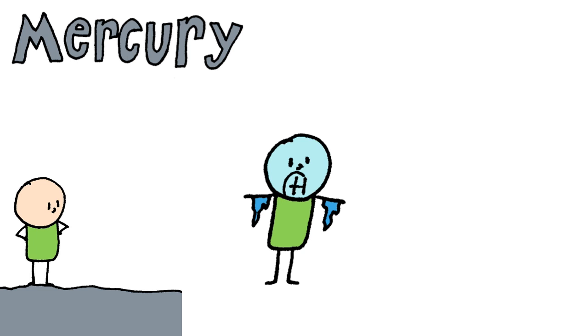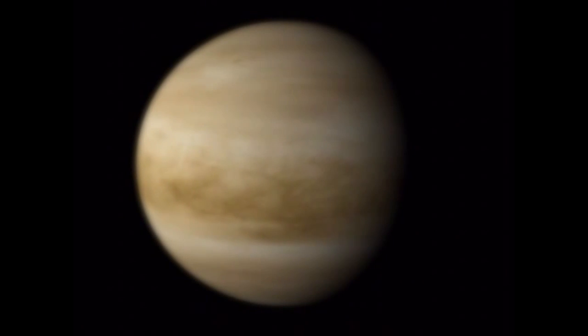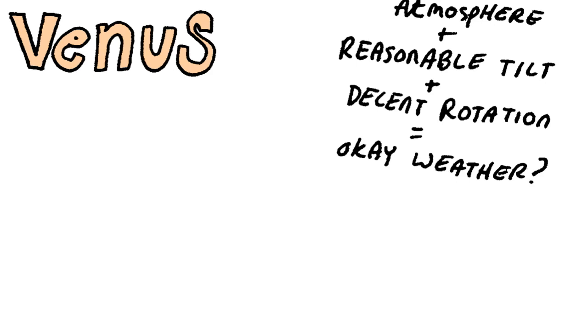Mercury, needless to say, is not a very hospitable place for people to visit. How about Venus though? It has an atmosphere, it has a tilt similar to Earth, and it has some rotation. Does this formula equal reasonable weather?